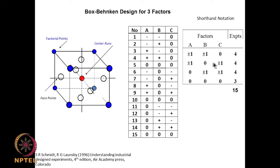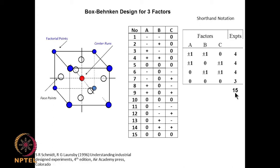In shorthand notation: A ±, B ±, C = 0 gives 4 experiments. Then A ±, C ±, B = 0 gives another 4. Then A = 0, B and C ± gives 4 experiments, plus 3 experiments at the central point (0,0,0). These all add up to 15 experiments total.